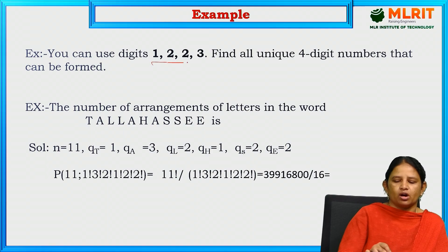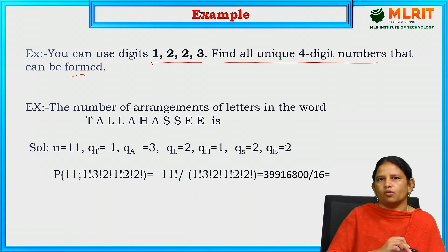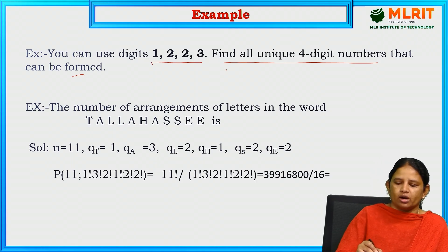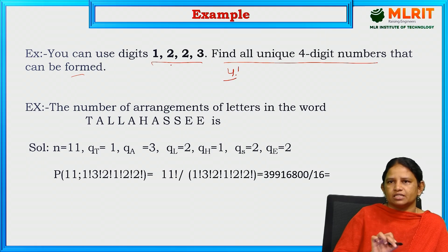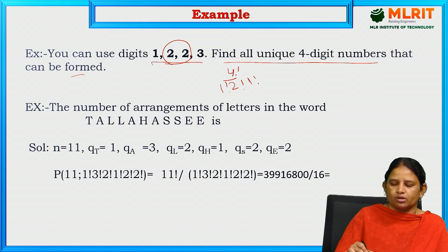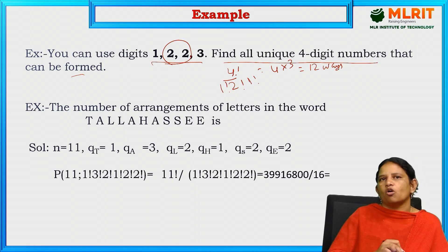Next, using the digits 1, 2, 2, 3 — find unique 4-digit numbers that can be formed. We can use all 4 digits. N equals 4, so 4 factorial divided by: 1 is repeated 1 time — 1 factorial; 2 is repeated 2 times — 2 factorial; 3 is repeated 1 time — 1 factorial. So 4 factorial by 2 factorial equals 4 times 3 equals 12 ways we can form the digits.